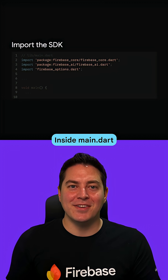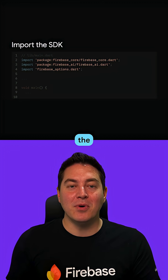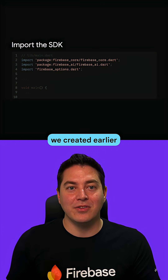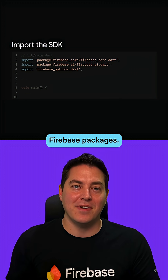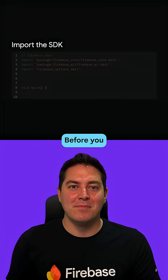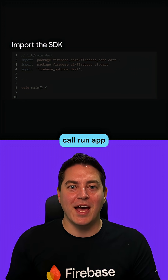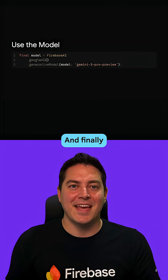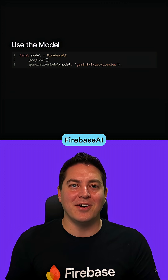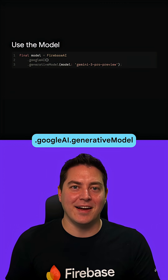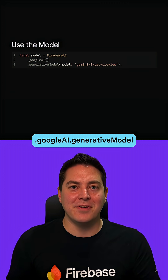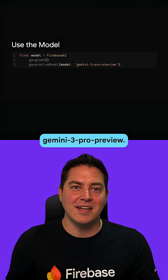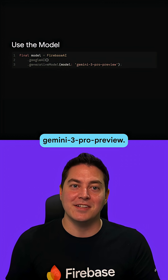Inside main.dart, you can import the FirebaseOptions.dart file we created earlier and the other Firebase packages. Before you call RunApp, we need to initialize the Firebase SDK. And finally, we can call FirebaseAI.googleai.generativeModel with the model string Gemini-3-pro-preview.